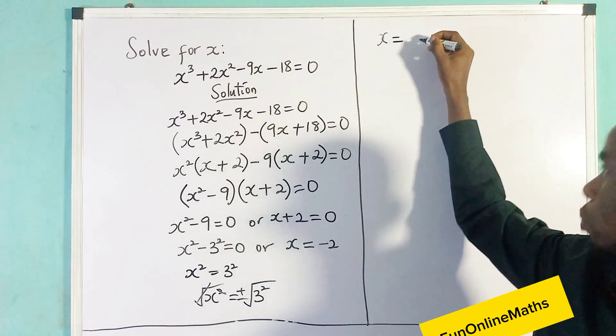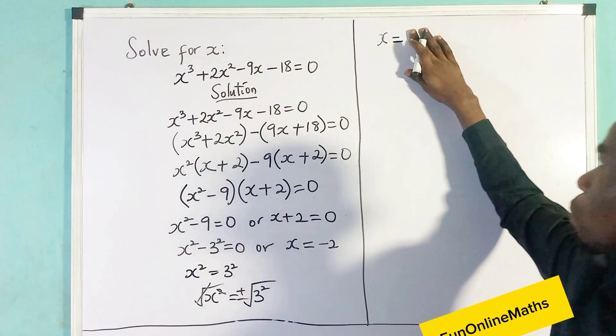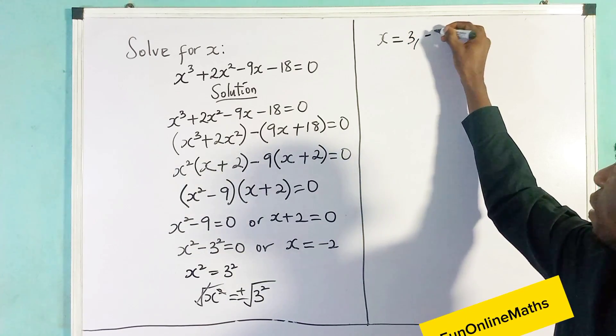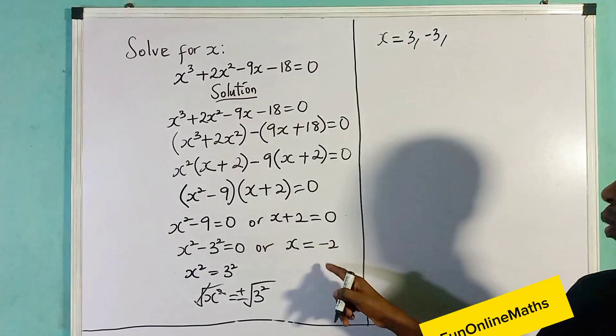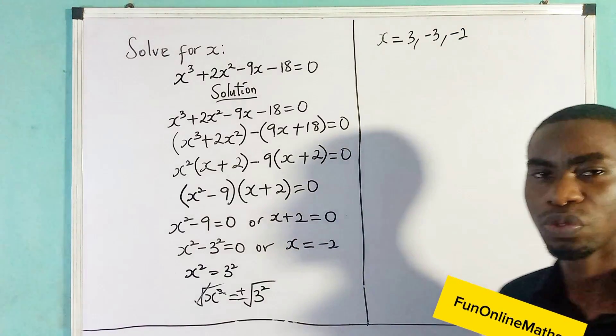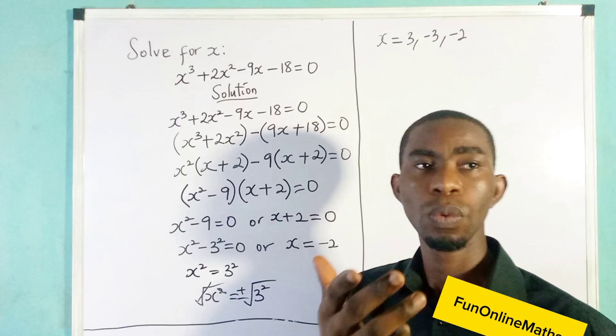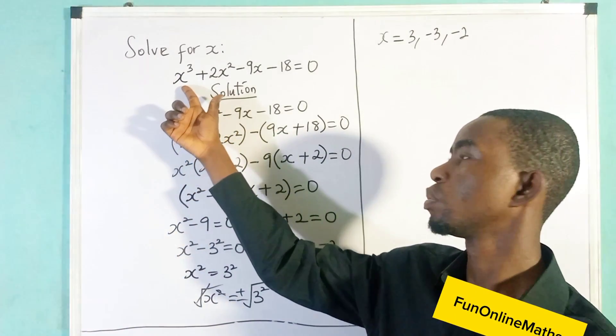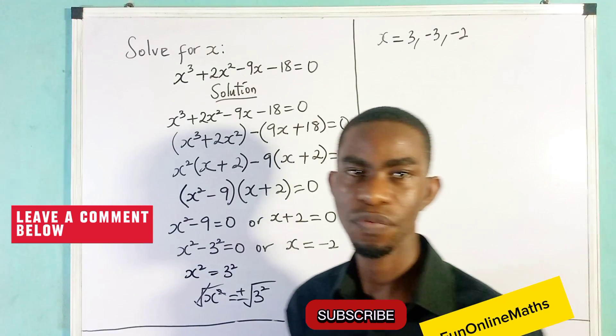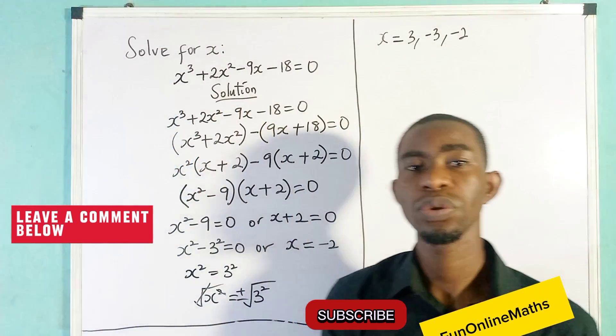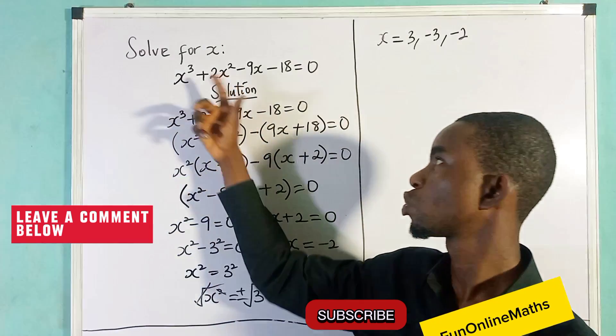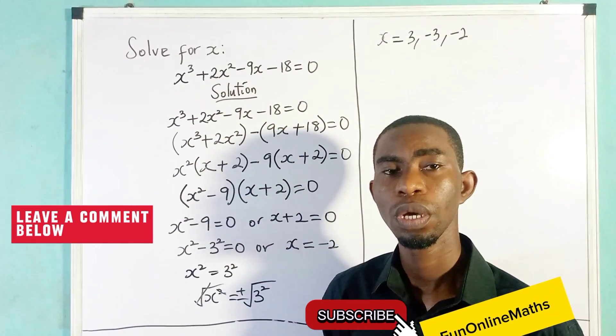A negative 3, or a negative 2, minus 2. Those are the values of x. Now take note, when we have the highest power of a polynomial to be 3, it means that we're looking for a solution for the values of x. It means that we're going to get three values of x. If the power was 2, a quadratic equation, we're going to get two values for x.